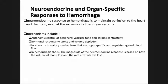Neuroendocrine and organ-specific responses to hemorrhage: the neuroendocrine response is to maintain perfusion to the heart and brain, even at the expense of other organ systems. Mechanisms include autonomic control of peripheral tone and cardiac contractility, hormonal response to stress and volume depletion, and local microcirculatory mechanisms that are organ-specific and regulate regional blood flow. In hemorrhagic shock, the magnitude of the neuroendocrine response depends on both the volume of blood loss and the rate at which it is lost.